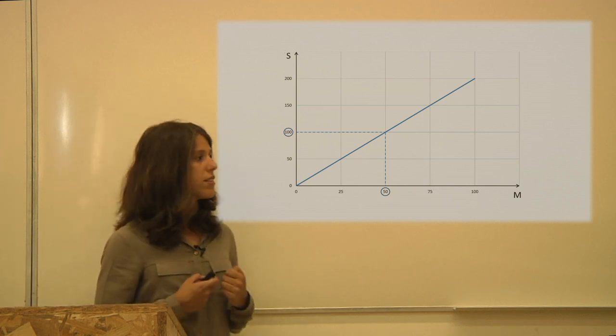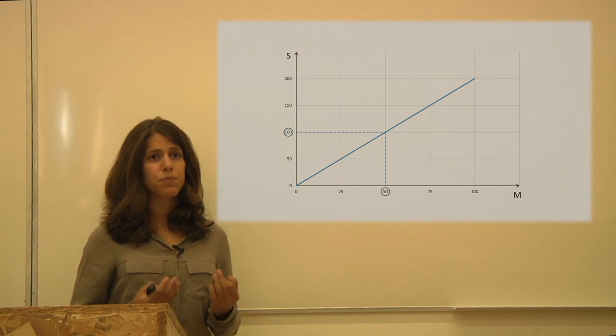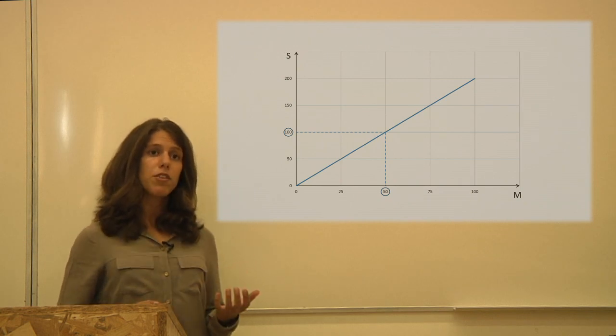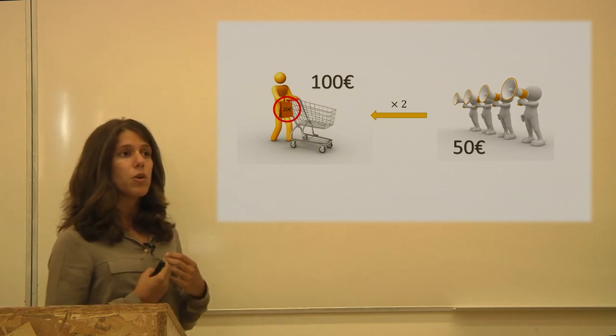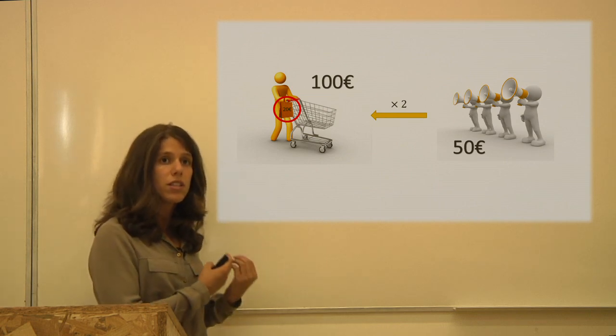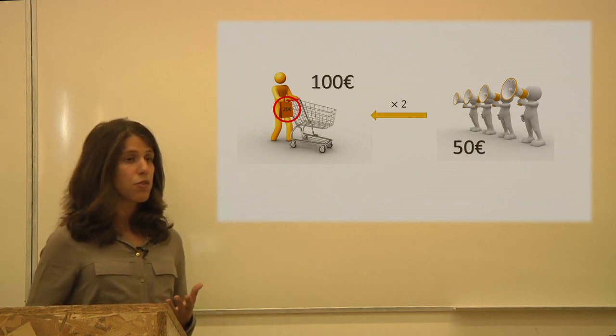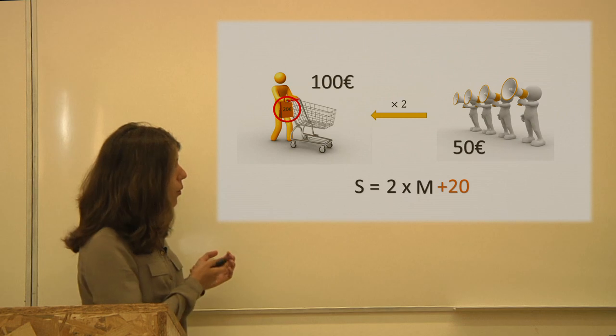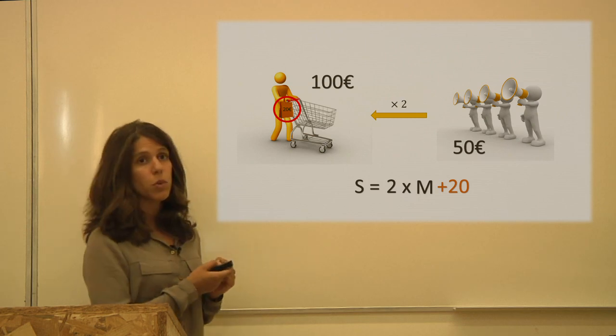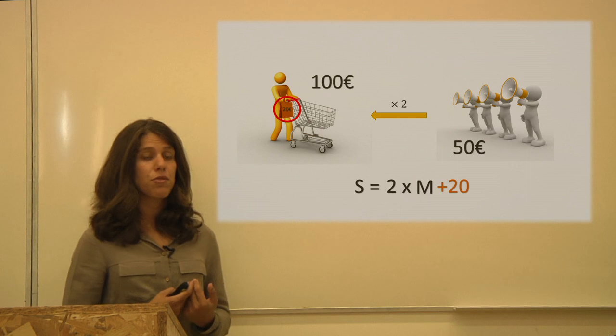But now assume that regardless of the amount that you spend in marketing everybody will buy an extra 20 euros. So you will get an extra 20 euros in sales. Therefore, in the mathematical expression we have seen before, now we have to add this plus 20. What is the implication to our graph?